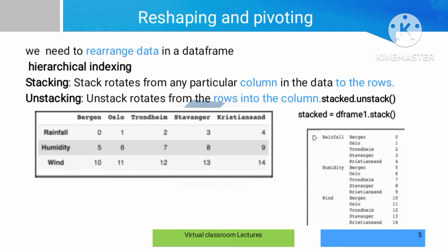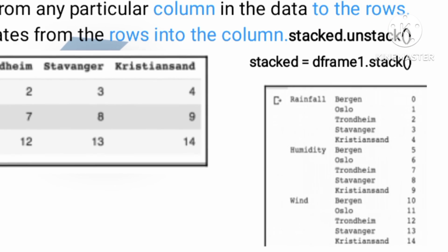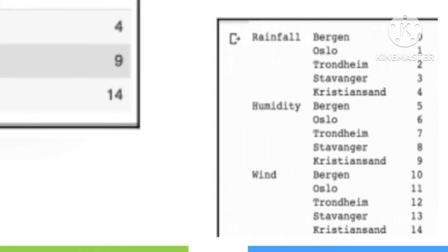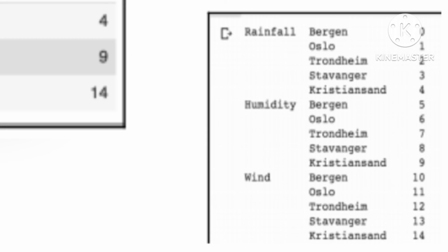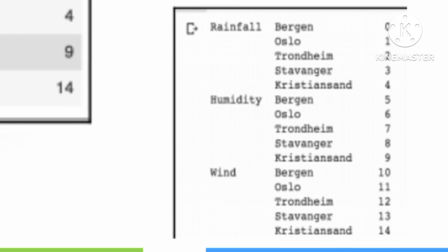Column to row conversion is done using the stacking method. In code: stack = dataframe1.stack(). Using the .stack() method, the rainfall, humidity, and wind columns are converted so that the country and values appear row-wise.